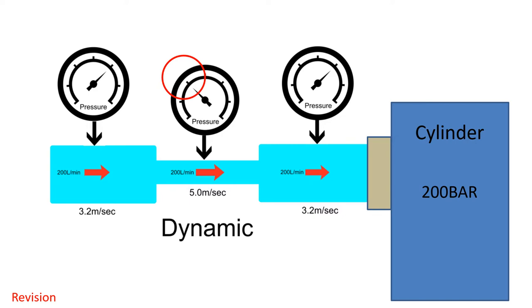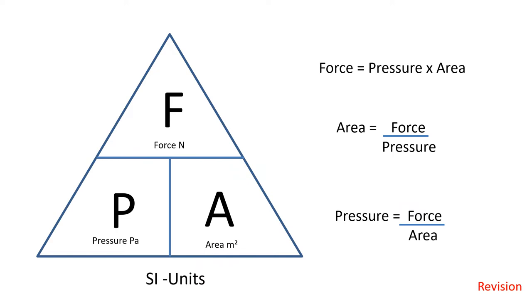What's going on in the narrower section of the conductor? The pressure dropped because the flow velocity increased. To maintain 200 litres a minute through the narrow section, the oil had to increase in speed. This is why it's important to select the correct hose diameter when manufacturing a hose assembly — selecting a hose that's too small could cause excessive heat and premature failure. Reviewing our force-pressure-area formula triangle, we can see that flow rate is not factored into the equation.